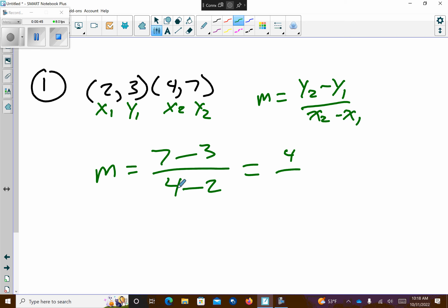So 7 minus 3 is 4. 4 minus 2 is 2. You could leave your answer like that as a slope, that's totally fine. Or you could make it 2 over 1, or you could make it just 2. It's whatever you choose you want to make your slope.